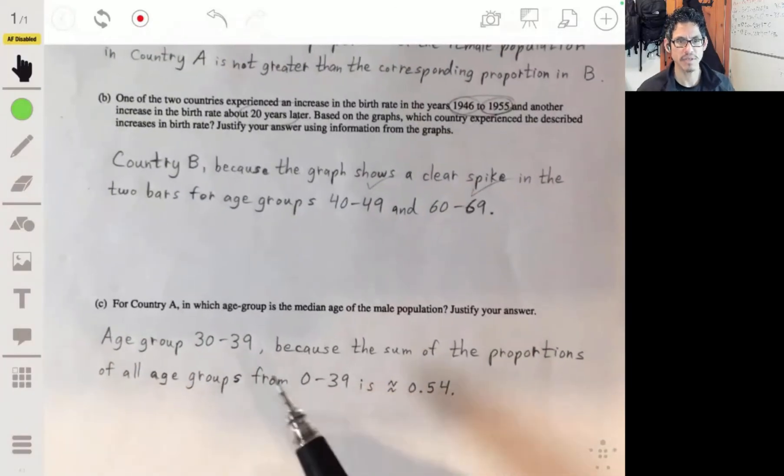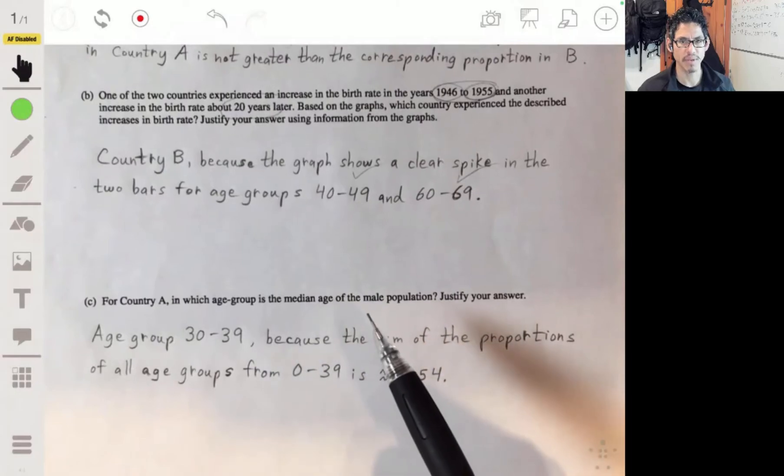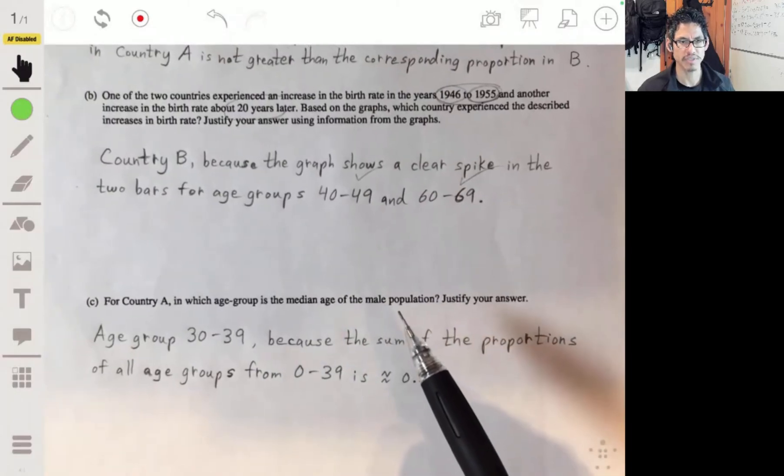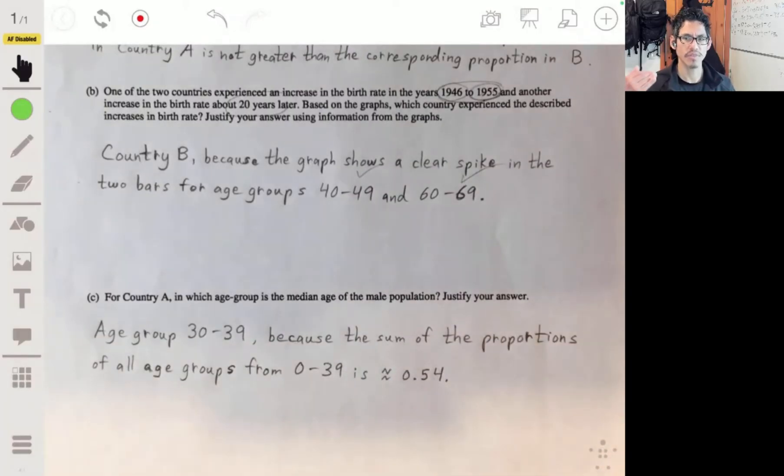And part C, for country A, in which age group is the median age of the male population? Justify your answer.